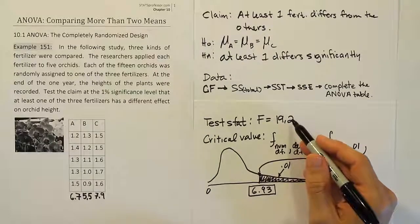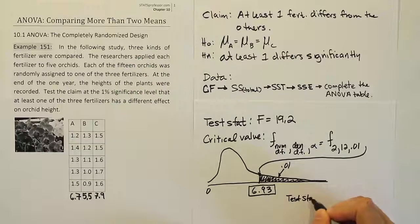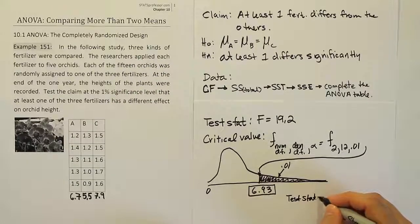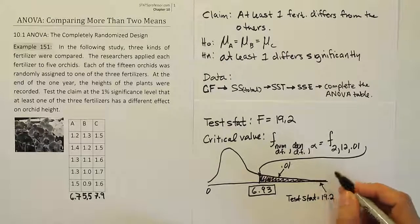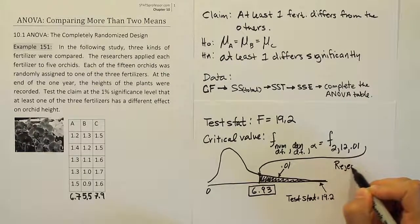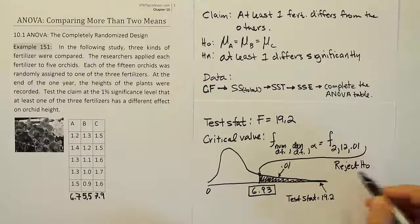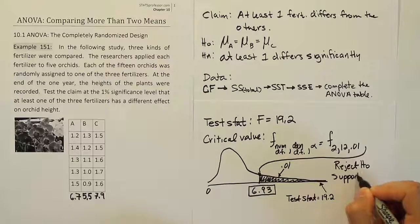If we compare this F test stat to it, I'm going to say that clearly the test stat of 19.2 lands well in the tail area, which means we are going to decide that we should reject H0. And if we reject H0, remember that means we should support HA.